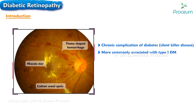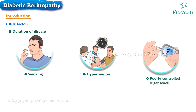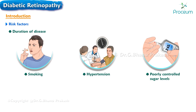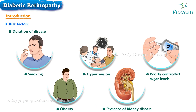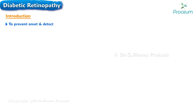It is more commonly associated with type 1 diabetes mellitus, and unfortunately, India currently has the highest number of diabetic cases worldwide. Several important risk factors contribute to the development of diabetic retinopathy, including the duration of the disease, smoking, hypertension, poorly controlled blood sugar levels, obesity, and the presence of kidney disease.